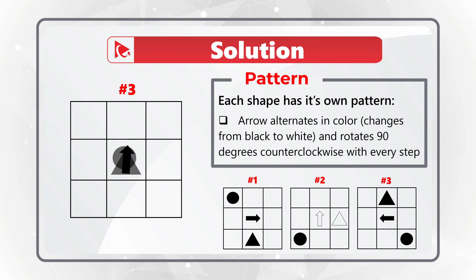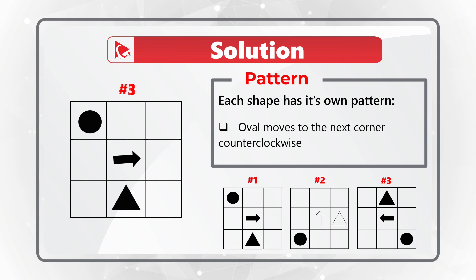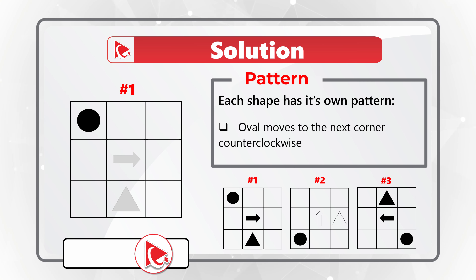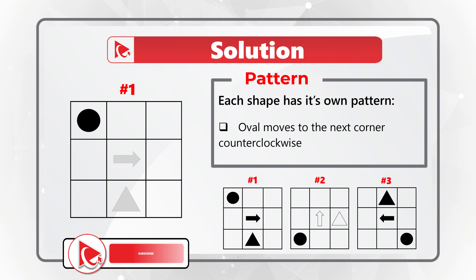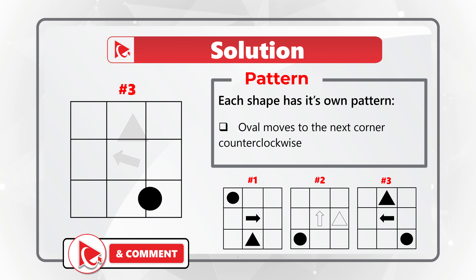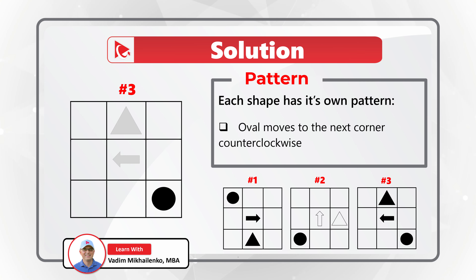Now let's look at the oval. The oval moves to the next corner counterclockwise. It starts in the upper left corner in matrix 1, then moves to the lower left corner in matrix 2, and then moves to the lower right corner in matrix 3.